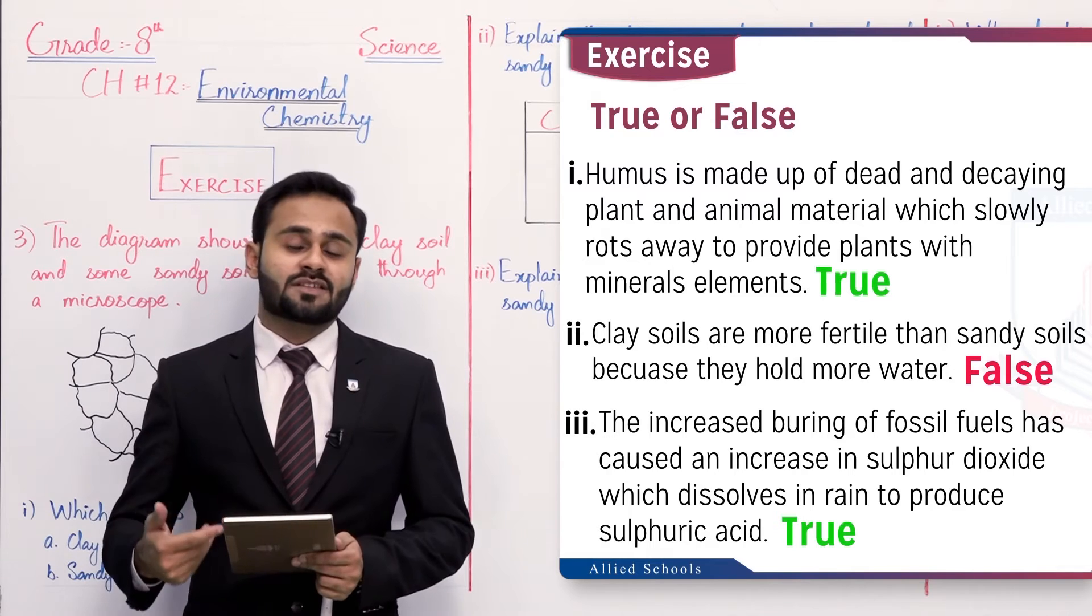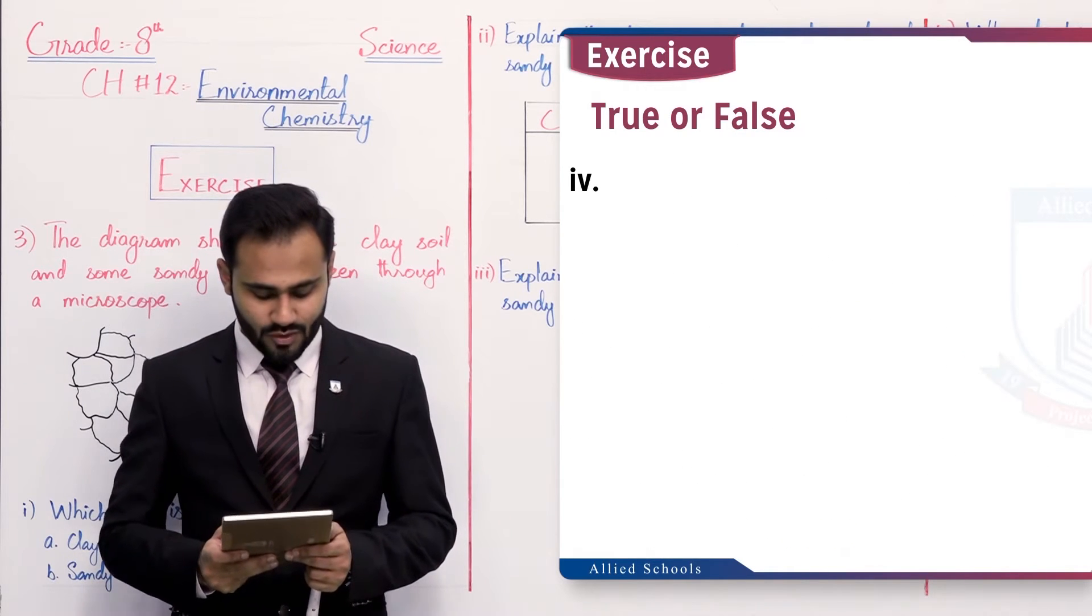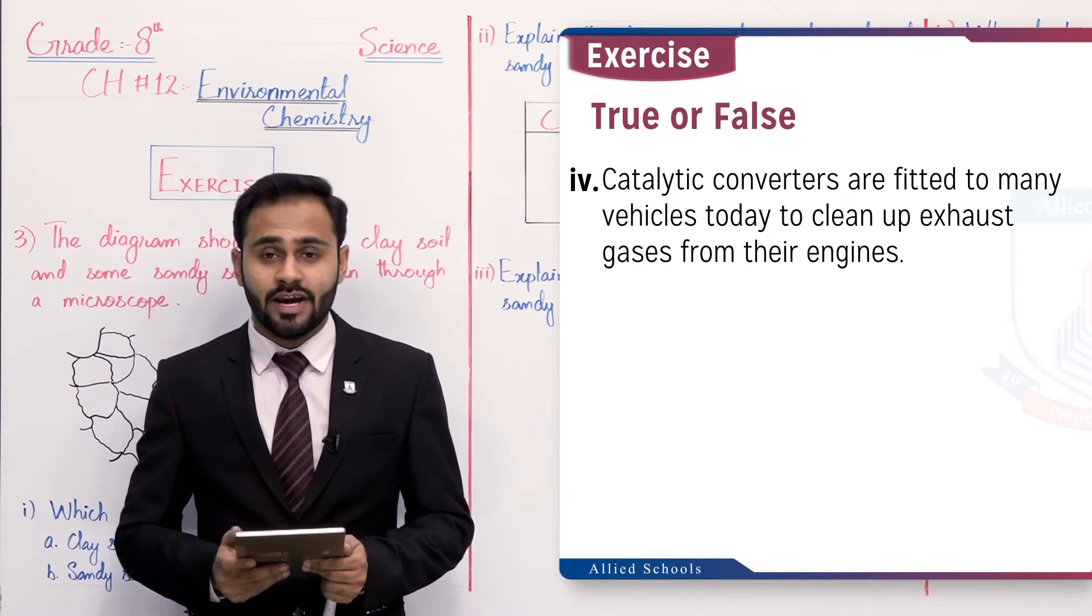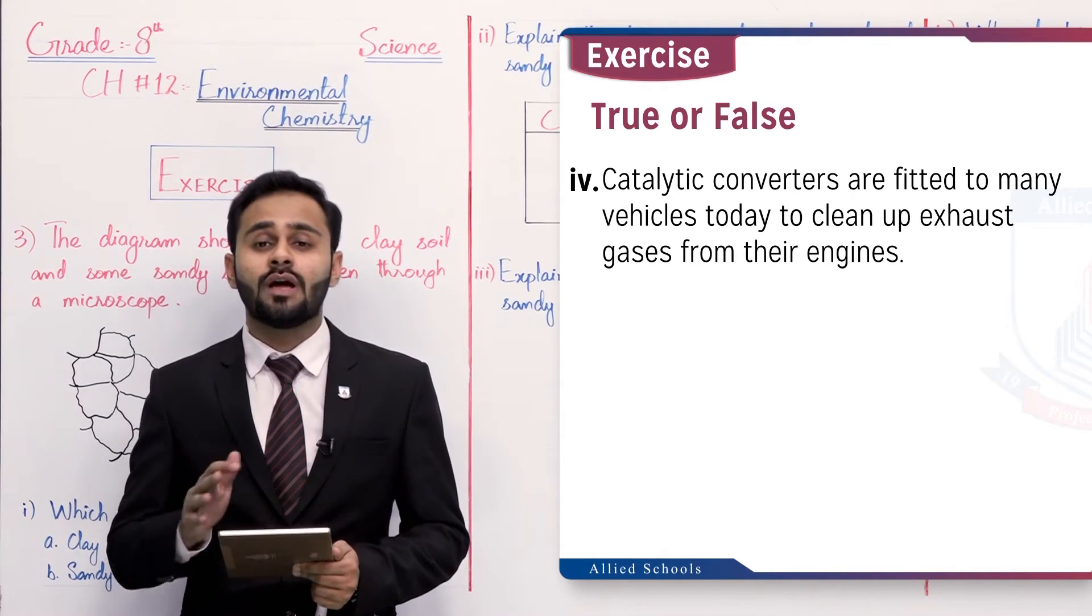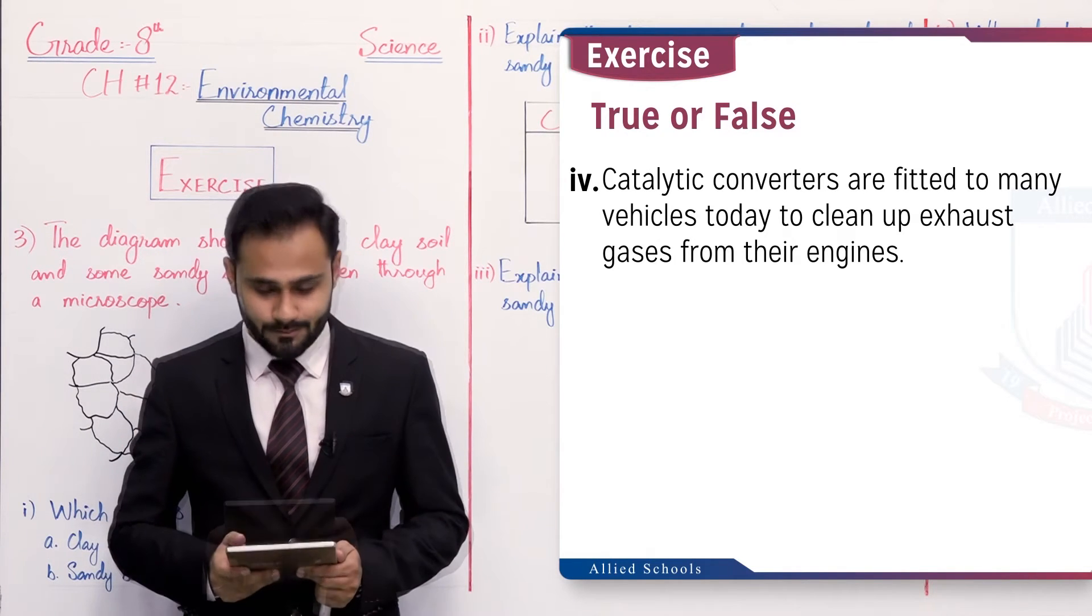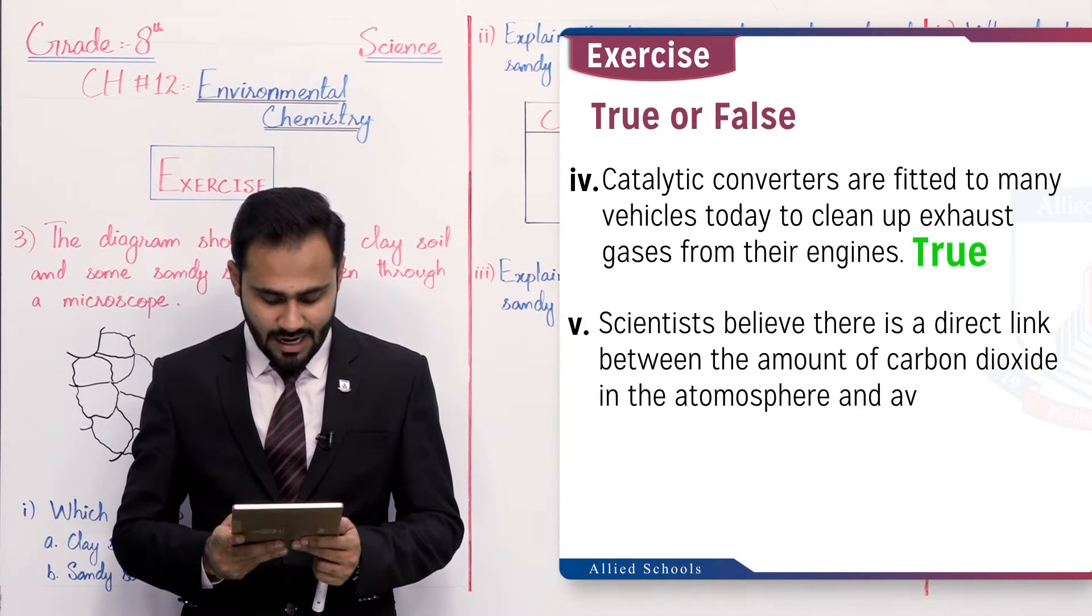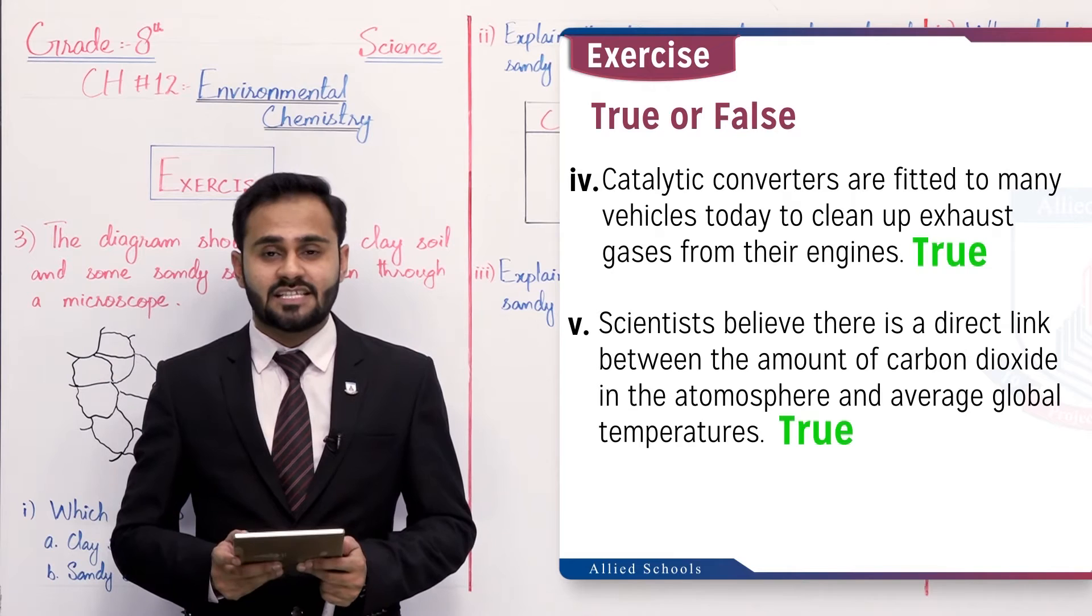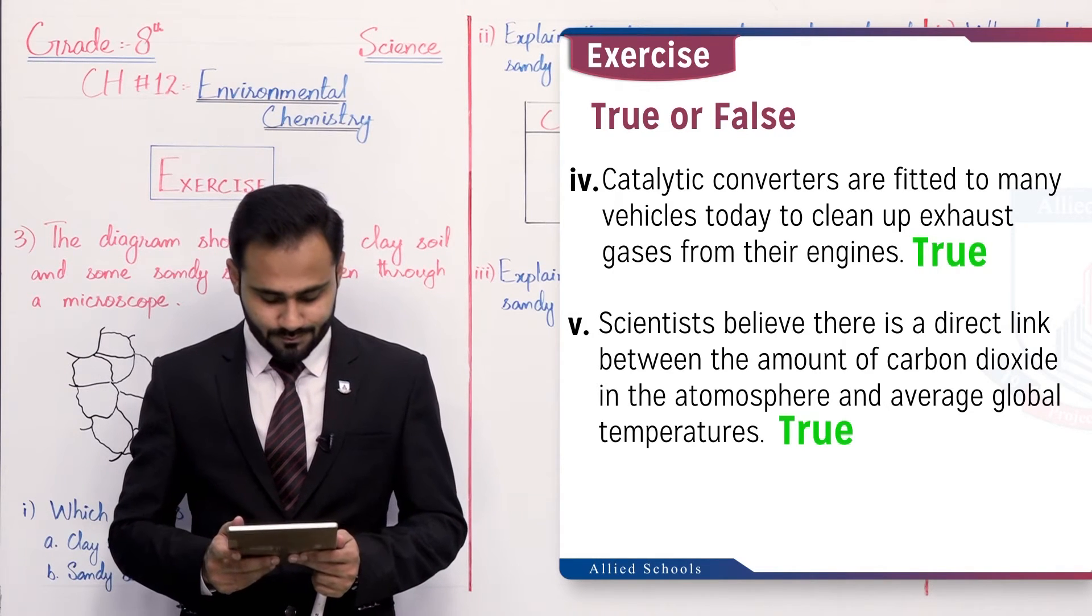The fourth statement: catalytic converters are fitted to many vehicles today to clean up exhaust gases from their engines. Yes, catalytic converters jo hai, jitni bhi exhaust gases and carbon dioxide gas produce ho raha hai, un ko bhi clean karti hai taake humara atmosphere jo hai wo clean reh sake aur waha par ultraviolet radiations jo hai wo bhi zyada zameen tak na pohonch sake taake jo ozone layer hai usko bhi effect na ho. So this statement is true. The fifth statement: scientists believe there is a direct link between the amount of carbon dioxide in the atmosphere and average global temperature. Yes, this is true. Humne last lecture mein do graphs discuss kiya tha meine kaha tha ke link hai carbon dioxide gas ka global warming ke saath, toh humne graph ke through discuss kiya tha. So this statement is true.